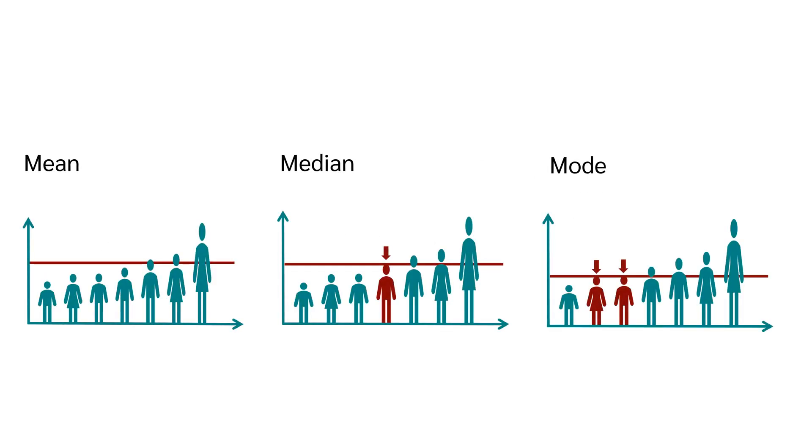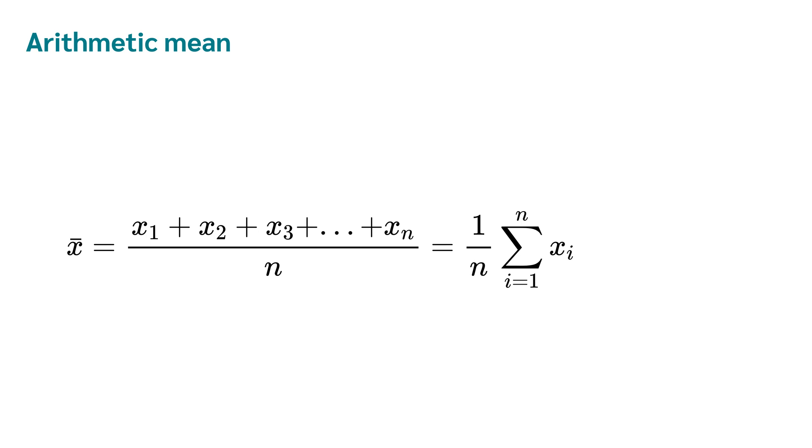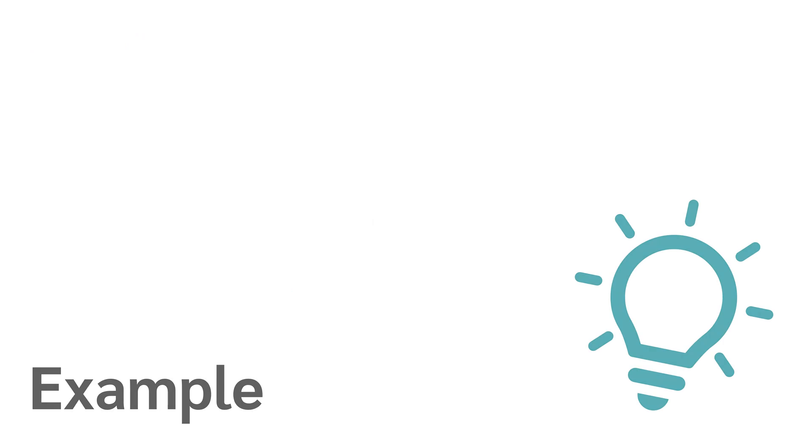Measures of central tendency are for example the mean, the median and the mode. Let's first have a look at the mean. The arithmetic mean is the sum of all observations divided by the number of observations.